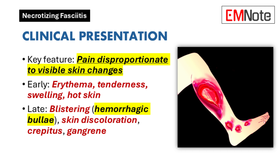Early diagnosis of necrotizing fasciitis is critical but can be challenging, as it can initially resemble cellulitis. One of the most important distinguishing features is pain that is disproportionate to the visible skin changes. Early-stage symptoms can include erythema, tenderness extending beyond the reddened area, swelling, and hot skin. Later stages may manifest as blistering, skin discoloration, crepitus — a crackling sensation under the skin due to gas production — and gangrene. Systemic symptoms like fever, chills, and confusion may also appear.